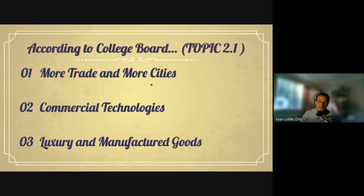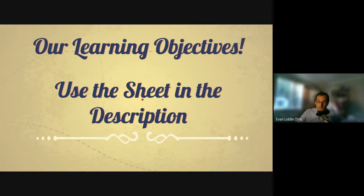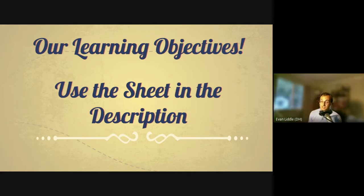Touching base on what the College Board wants you to know if you're taking AP World about the Silk Road — they basically have three things: one would be more trade and more cities, two would be commercial technologies, and three would be luxury and manufactured goods. Providing examples of these and being able to explain them would put you in a really good position. This presentation is going to be really long, so please take notes. There is a sheet in the description you can copy and fill in.